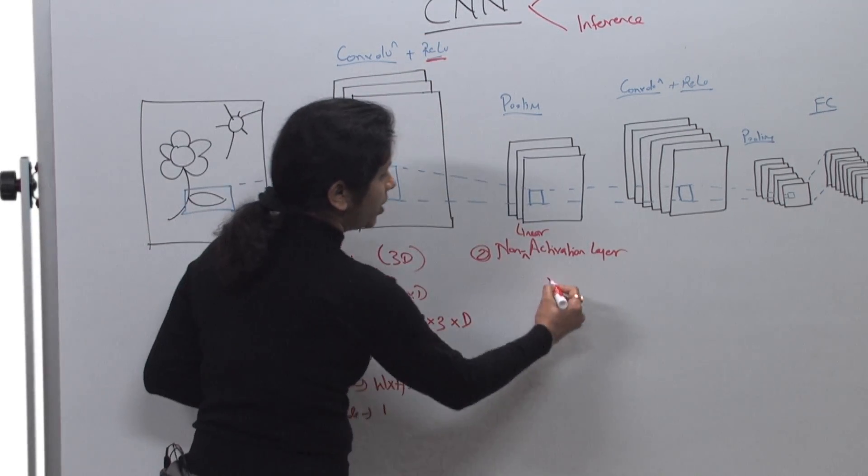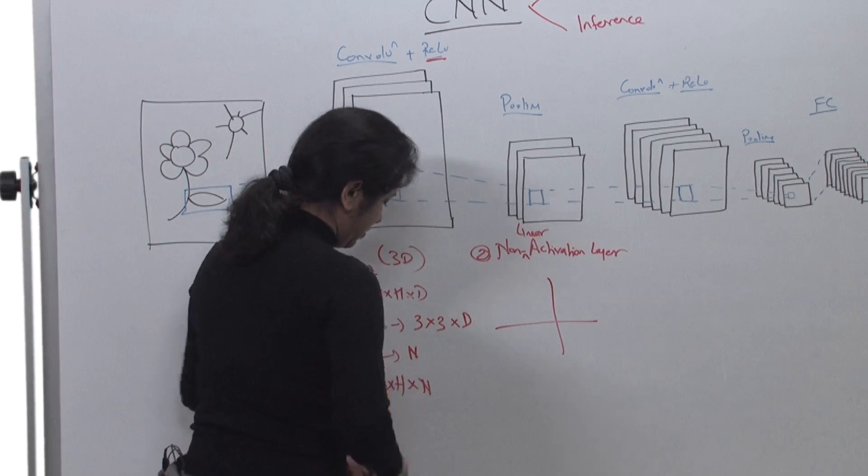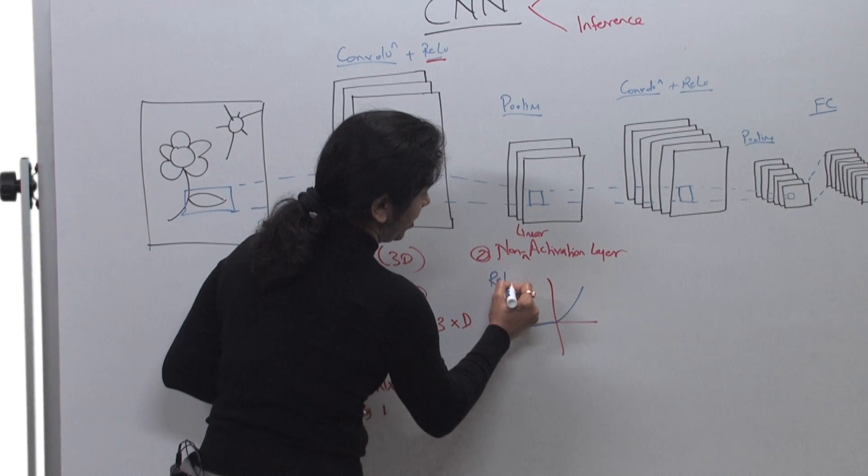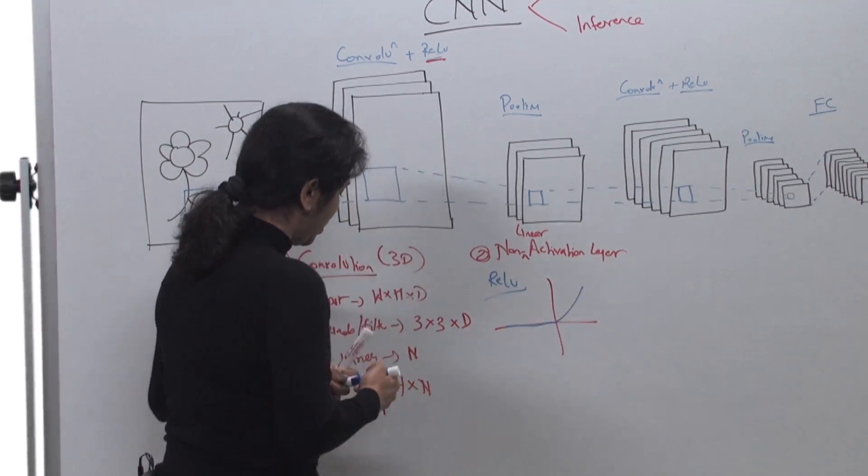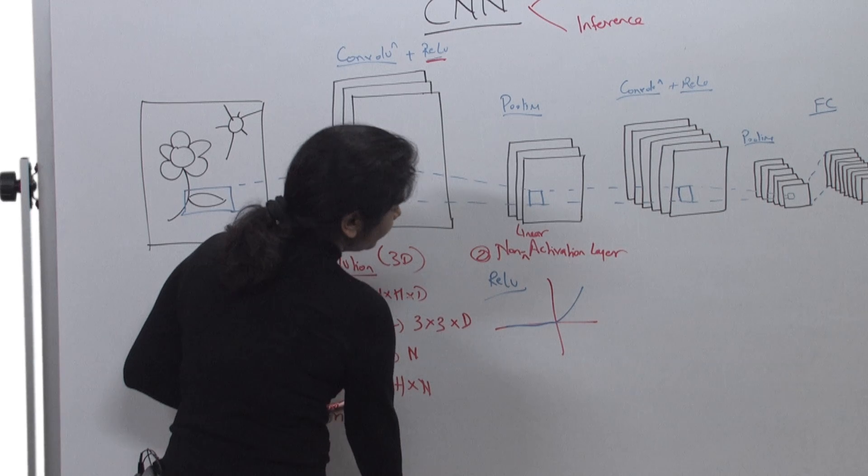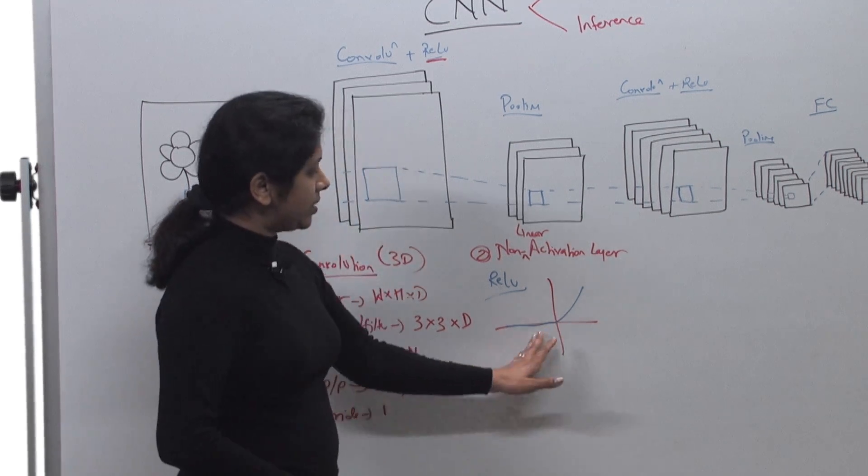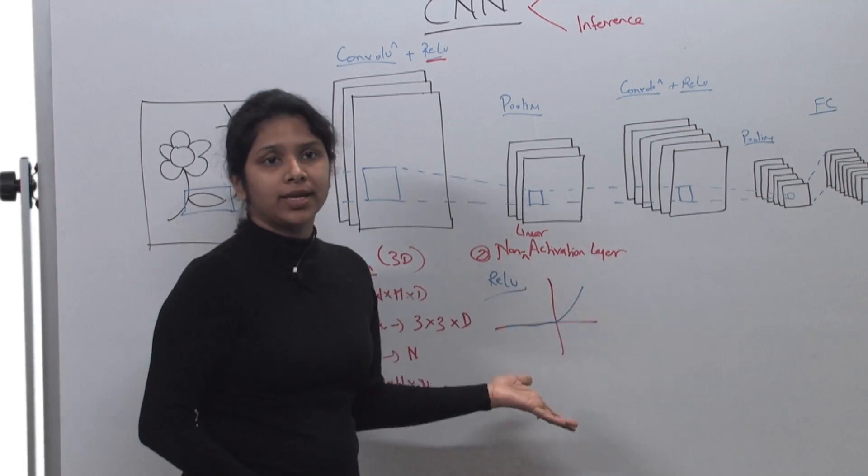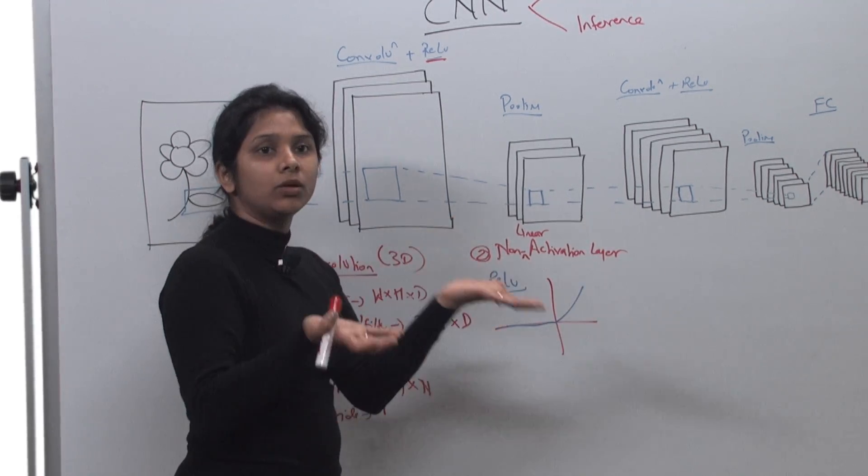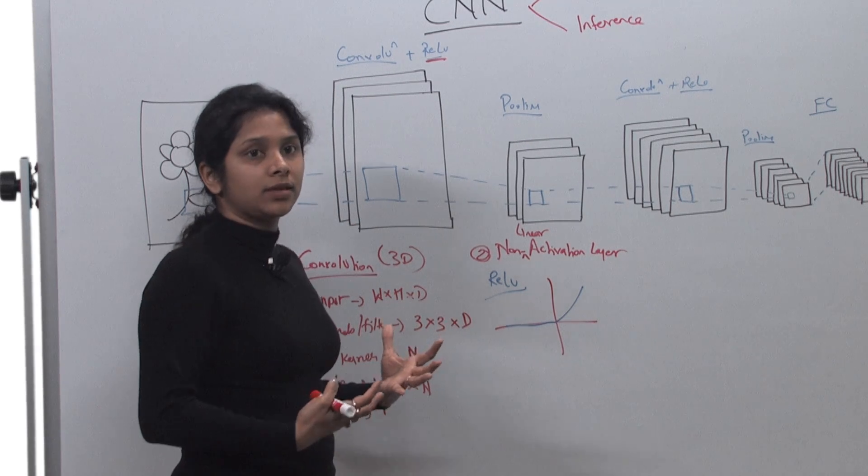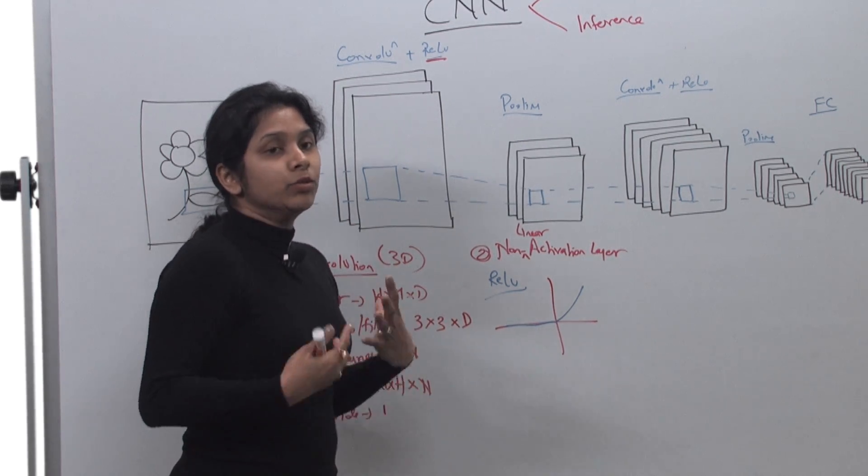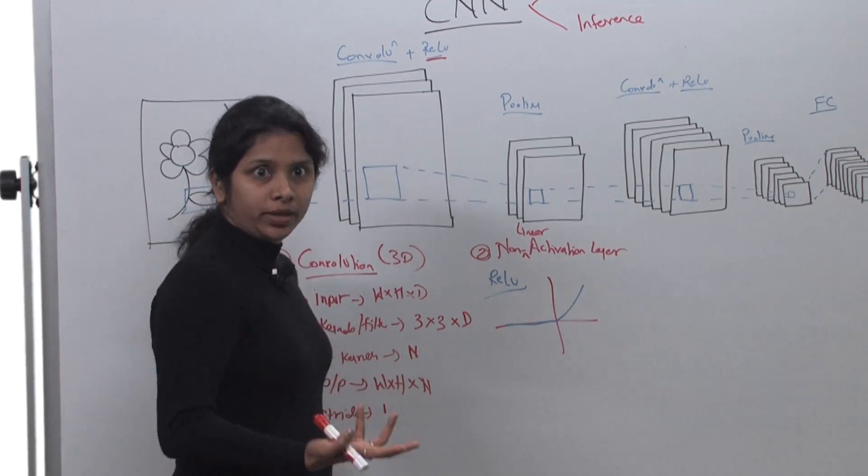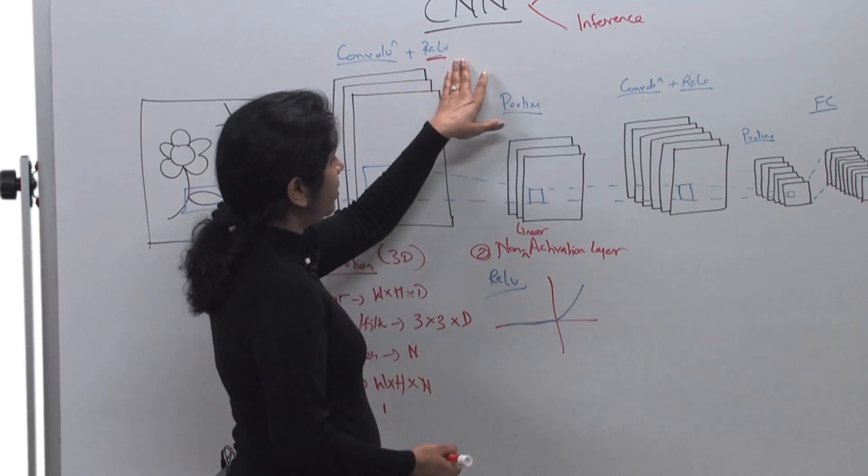So what that will do is it will take the input data. ReLU is one of the most common ways to do it, and everything which is less than zero will be made zero. So all negatives are made zero and the positives stay as is. That's where it brings that non-linearity in your data set, and hence it removes that overfitting probability and makes it more adaptable to a real-world case. That's where the ReLU comes into picture.